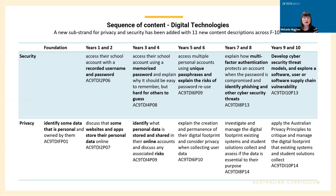In years one and two, the expectation is that students will start to talk about and be aware that they need to have a username and password. At that junior level, it's acceptable that they record a username and password on a card or piece of paper. As they move up to years three and four, we want them to memorise a password and think about how to create one that's easy to remember but hard for others to guess. In years five and six, we start thinking about creating unique passphrases and getting students to think carefully about the risks of reusing passwords and other associated risks.